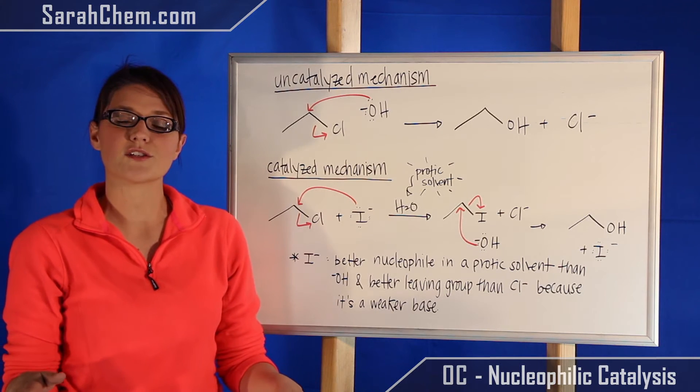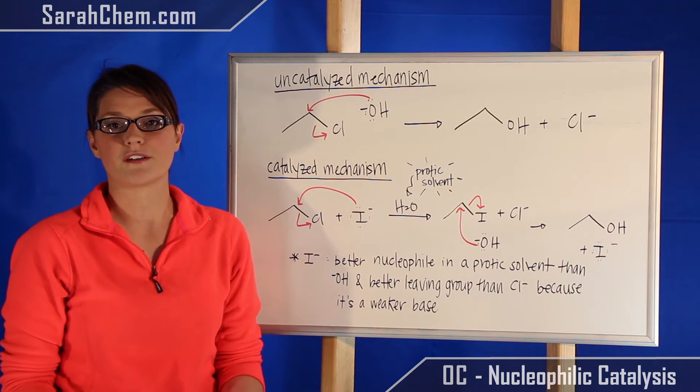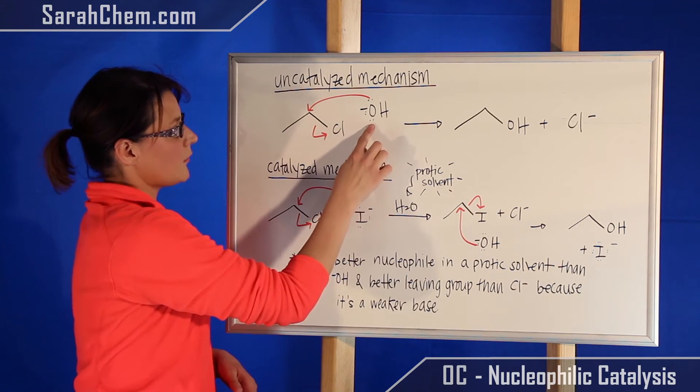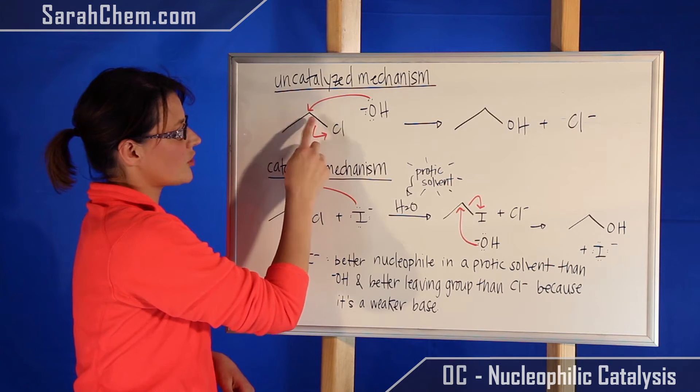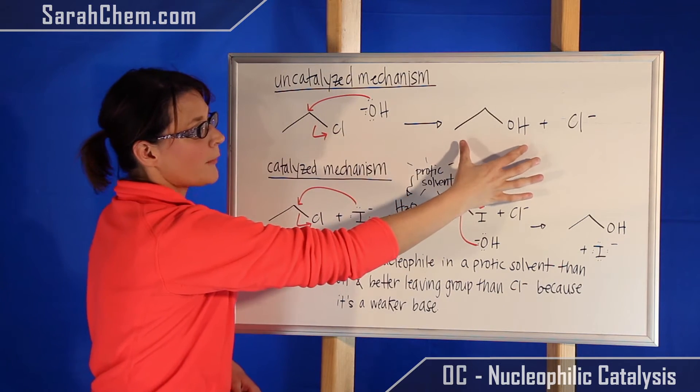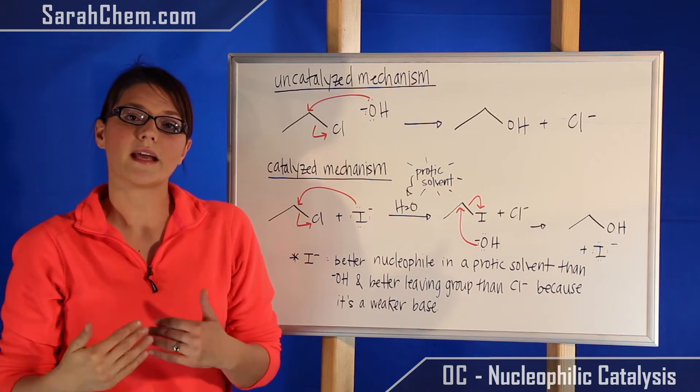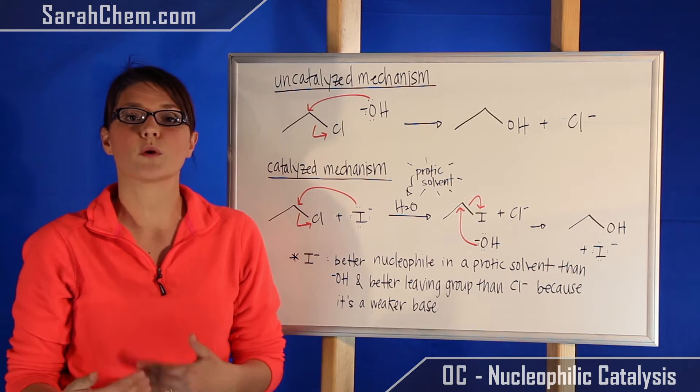We're just going to run an SN2 mechanism where hydroxide is our nucleophile. So hydroxide will come, it will attack the carbon position and kick off the chloride. So we form our alcohol and the chloride anion.